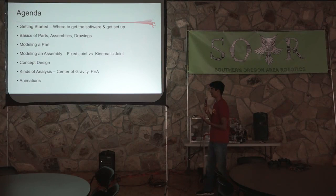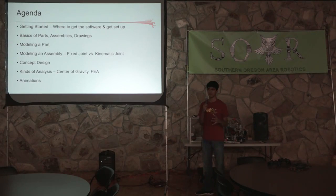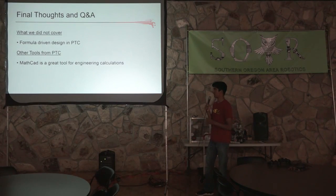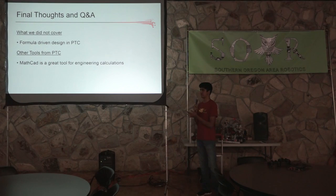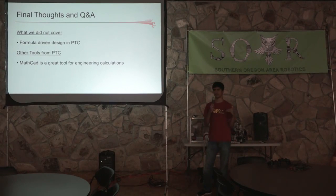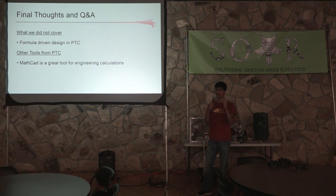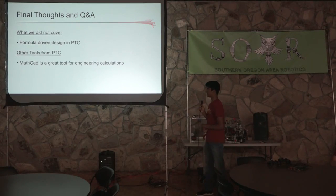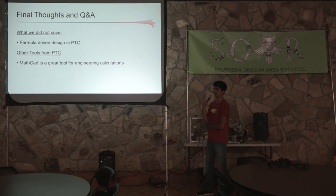Overall, we went over how to download the software, how to get started, how to build a basic assembly, where you can learn how to do that, and the uses of PTC in FTC such as concept designs and analysis. One thing we didn't cover is formula-driven design — it's a really nice feature where you can build dimensions in relationship to each other. For example, if you sketch a rectangle, you can have two sides always be half the length of the other two, so if you change one dimension from 6 to 4, the related sides change from 3 to 2, saving a lot of time. You can also use MathCAD, provided by PTC for free, to do all your calculations.